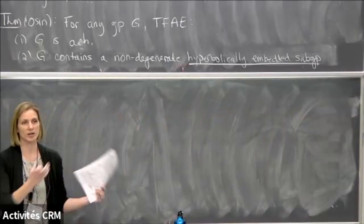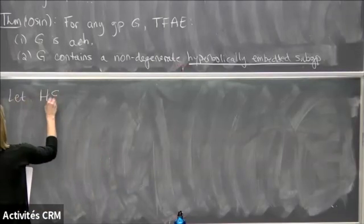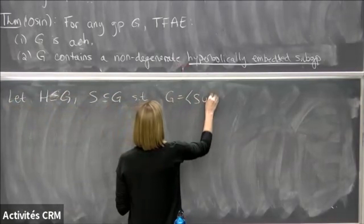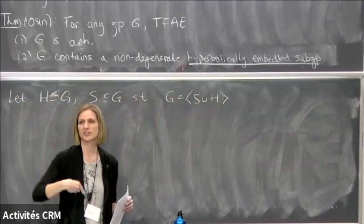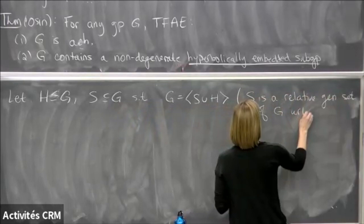Defining hyperbolically embedded subgroups takes some work. They are difficult to define in general, but turn out to be a very powerful tool for studying acylindrically hyperbolic groups. They allow us to turn geometric and dynamical questions — like actions on hyperbolic spaces — into combinatorial questions about paths in Cayley graphs. They are defined using paths in Cayley graphs. Let H be a subgroup of G and S a subset of G such that G is generated by S union H. We call S a relative generating set of G with respect to H.